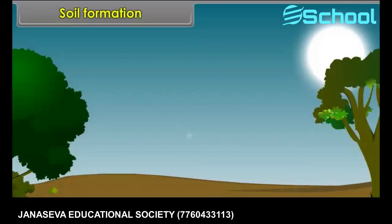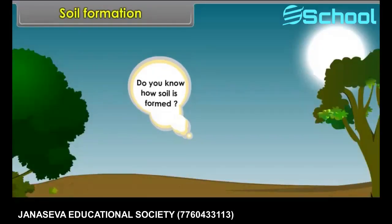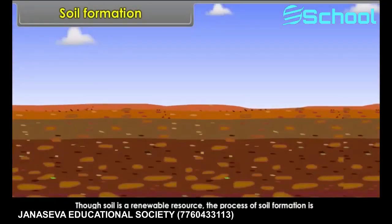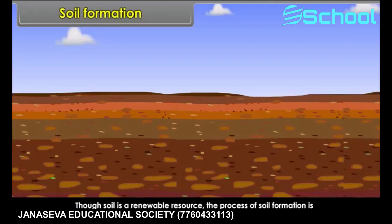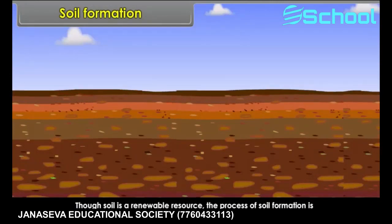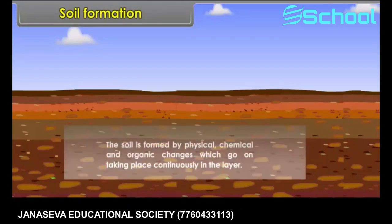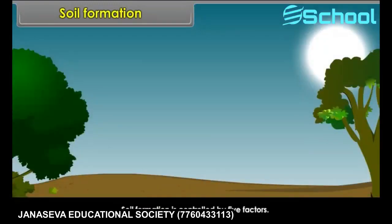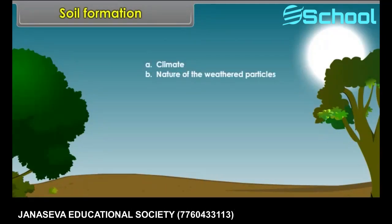Soil formation. Though soil is a renewable resource, the process of soil formation is extremely slow. The soil is formed by physical, chemical, and organic changes which go on taking place continuously in the layer. Soil formation is controlled by five factors: climate, nature of the weathered particles, topography, time, and soil profile.